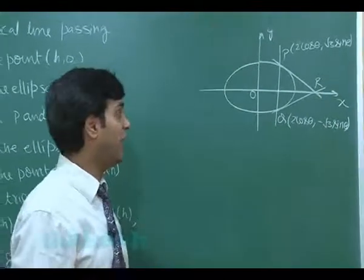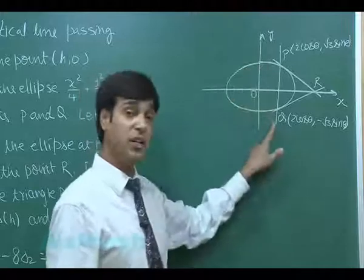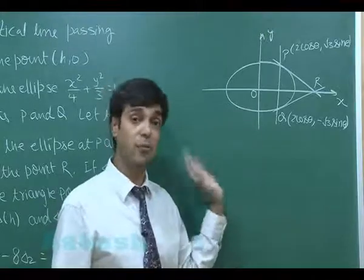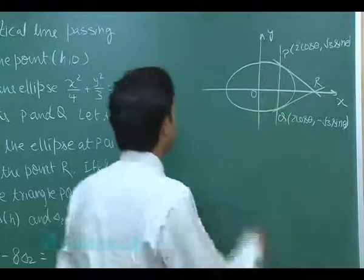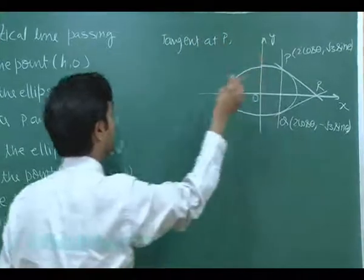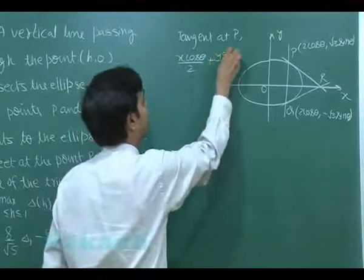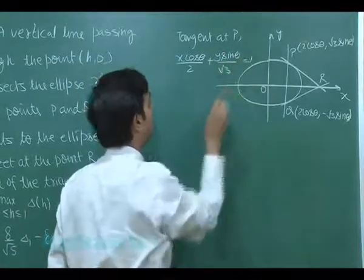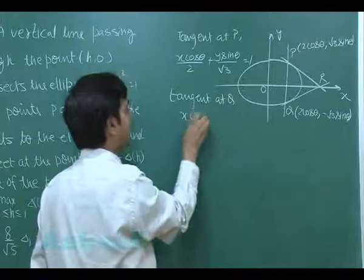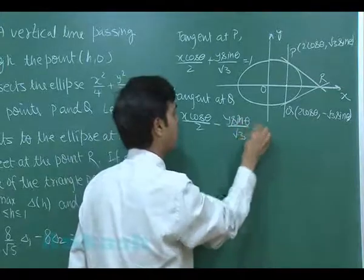We have taken the general points on the ellipse in parametric form, that is acosθ, bsinθ. We can write the equations of tangents at these two points: xx₁/a² + yy₁/b² = 1 form. Now, when we write the tangent at P, this comes out as x cosθ/2 + y sinθ/√3 = 1. Similarly, the tangent at Q: x cosθ/2 - y sinθ/√3 = 1.